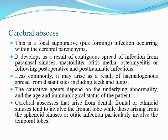Cerebral abscess usually develops as a result of contiguous spread of infection. Whenever there is an infection in the neighboring structures of the brain, like paranasal sinuses, mastoiditis, otitis media, osteomyelitis, or when there is trauma to the head or surgery, abscess may occur within the brain parenchyma.